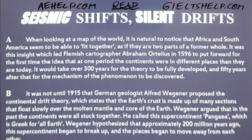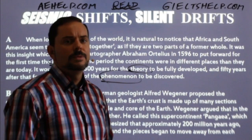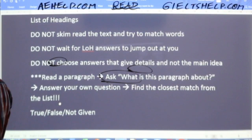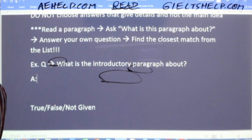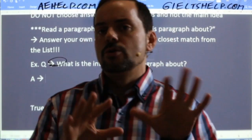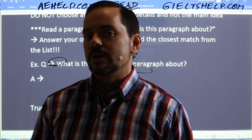Now we ask: what is this introductory paragraph about? Many students make the mistake of jumping straight to searching the list of headings. Stop — think about your own answer first. The paragraph is about a person with an idea — an intuitive notion — when looking at a map. The correct answer is number six: 'Intuitive Notion,' because 'notion' is a synonym for 'idea,' and 'intuitive' means it naturally appears to fit together.